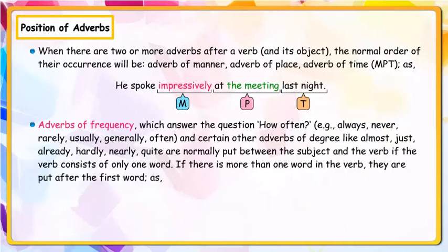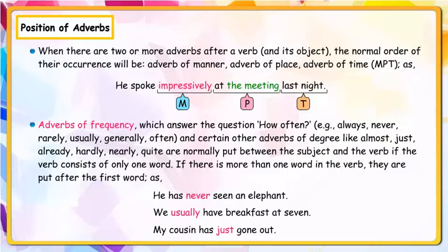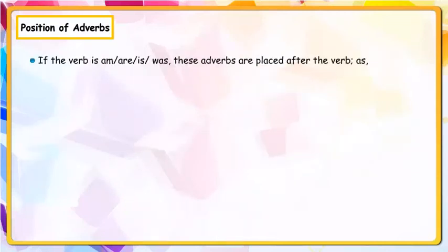Adverbs of frequency, which answer the question 'How often?' — examples: always, never, rarely, usually, generally, often — and certain other adverbs of degree like almost, just, already, hardly, nearly, quite, are normally put between the subject and the verb if the verb consists of only one word. If there is more than one word in the verb, they are put after the first word.